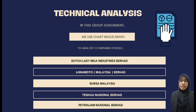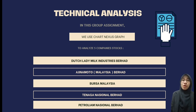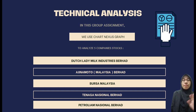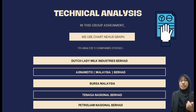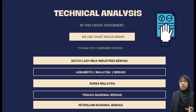For this group assignment, we are using ChartNexus to analyse the technical analysis on 5 shariah-compliant company stocks from 5 famous companies based in Malaysia, which are Daslady Industry Berhad, Ajinomoto Malaysia Berhad, Bursa Malaysia, Tenaga Nasional Berhad, and Petroleum National Berhad.